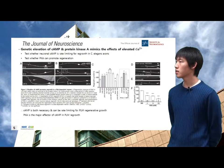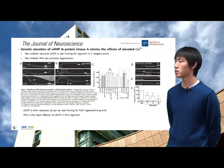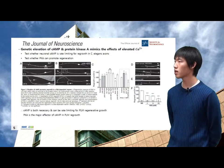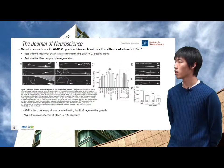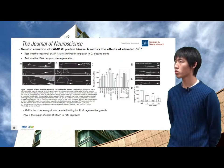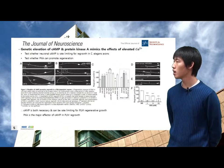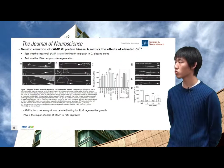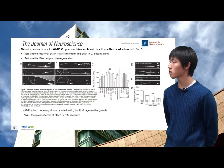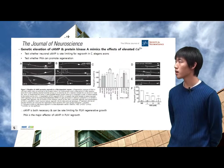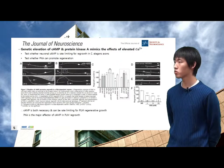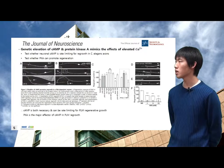They then tested whether neuronal cAMP is rate-limiting for regrowth in C. elegans axons, and whether protein kinase A can promote regeneration. They tested a gain-of-function mutation in the neuronal adenylyl cyclase and loss-of-function mutations in the neuronal phosphodiesterase. From these mutation experiments, they concluded that cAMP is both necessary and rate-limiting for regenerative growth, and that protein kinase A is the major effector of cAMP in regrowth.